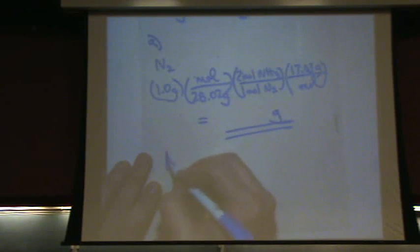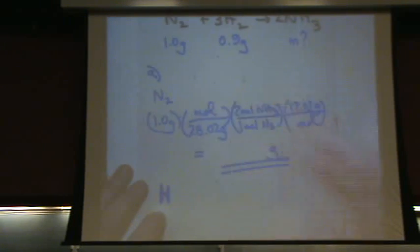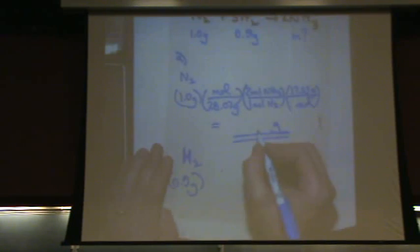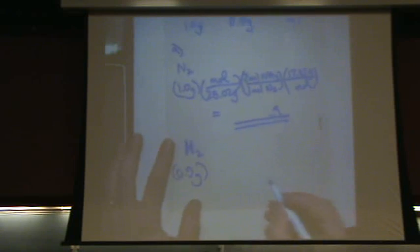And then the other part is you go to H2. The other one for which you're given information in the problem. H2, 0.9. Did somebody get this mass?